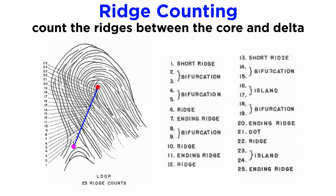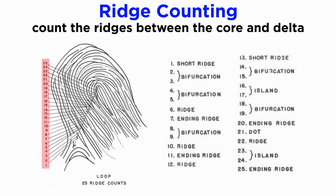The first step of ridge counting involves drawing an imaginary line between the core and the delta. Then all the ridges that intersect this imaginary line are counted. The number of ridges intervening between the delta and the core is known as the ridge count for that pattern. There are also a few rules we need to remember while counting. The exact points of the core and delta need to be located, and the core and delta are not themselves to be included in the ridge count.